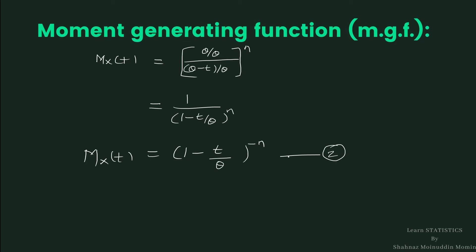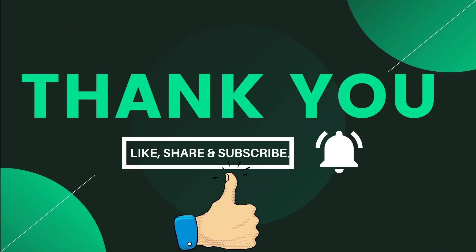In this way we calculate the MGF of gamma distribution in two different forms. In the previous lecture we have already learned different concepts of gamma distribution. If students want to learn that lecture, then click at the top right corner of the screen, and the link is also given in the description box. Many more lectures from statistics are available in Learn Statistics class. If students like this lecture, please click the like button and share with your friends. Students are requested to subscribe for upcoming lectures. We will meet in the next lecture with the next topic. Till then, thank you.